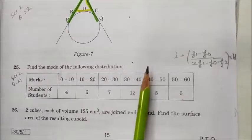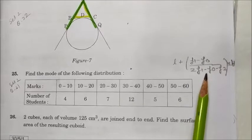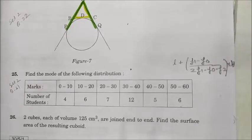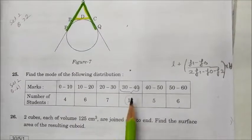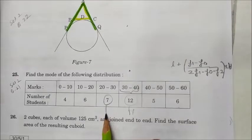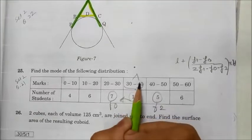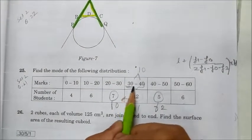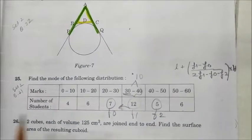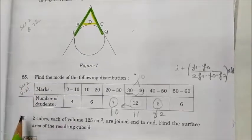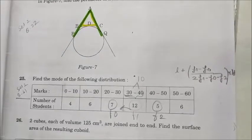Question number 25: Find the mode of the following distribution. The formula for mode is L + [(f1 − f0) / (2f1 − f0 − f2)] × h. The modal class is the one with the highest frequency. We identify f1, f0, f2, the class height h = 10, and lower limit L = 30. Substituting all values gives the final mode value.